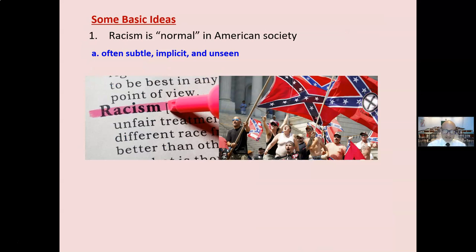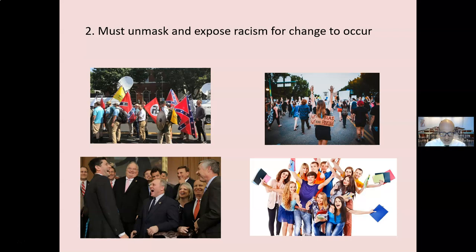Some basic ideas of critical race theory: racism is normal — it's not an aberration. It has become so normal; it's a fabric of our society. It's enmeshed, often subtle, implicit, and unseen, but it is there. It must be unmasked and exposed. If change is to occur, we must examine how people of color are disadvantaged — the social, economic, judicial, and educational forces that make it more difficult for people of color and easier for the privileged, those who are the majority.